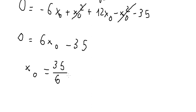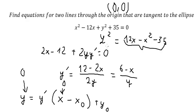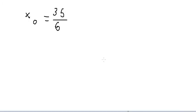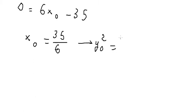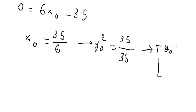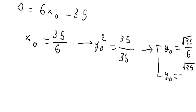We substitute x-naught equals 35 over 6 back into the equation to find y-naught. We get y-naught squared equals 35 over 36. Taking the square root gives two solutions: y-naught equals positive square root of 35 over 6, and y-naught equals negative square root of 35 over 6.